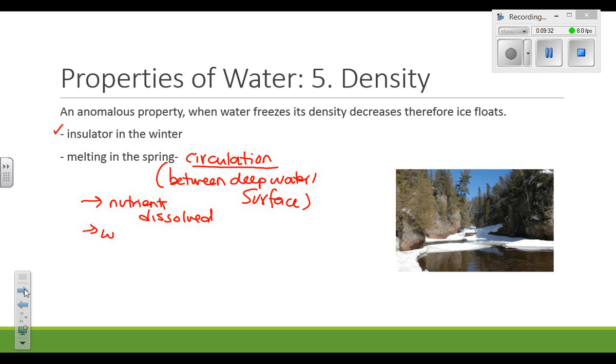And this is important for organisms because we know that there are nutrients dissolved, there are wastes dissolved. Because of all of the substances that are dissolved in water, it's important that the water is circulating so that these substances can be exchanged or moved around in the environment.